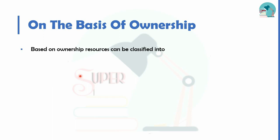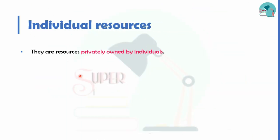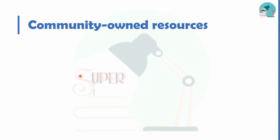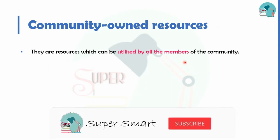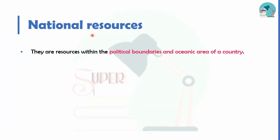Based on ownership, resources are classified as individual, community-owned, national, and international. Individual resources are private resources like an apartment or private land. Community-owned resources are shared by all members of a community, such as public parks. National resources are those within the boundaries of India, like tropical forests, which belong to the country.